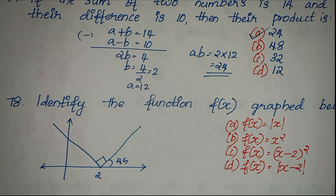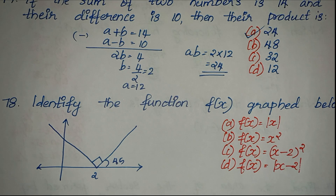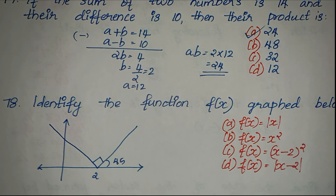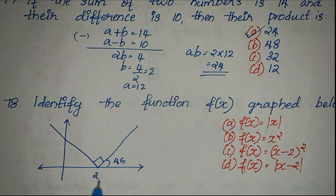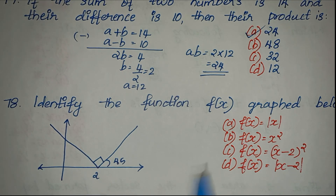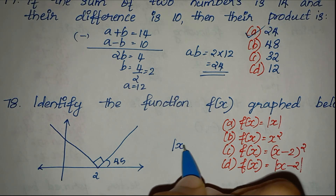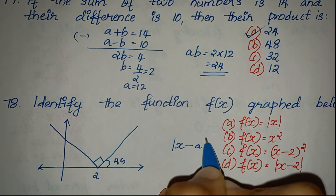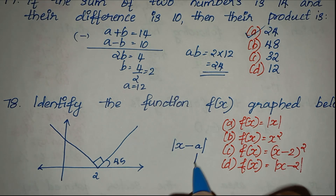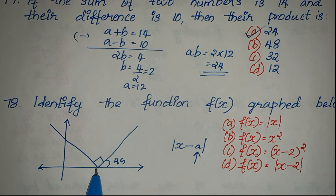Multiplying a and b: a equals 12 and b equals 2, so a times b equals 24. Option A is the right answer. Question number 78: identify the function from the graph below. We have a V shape, which suggests a modulus function.